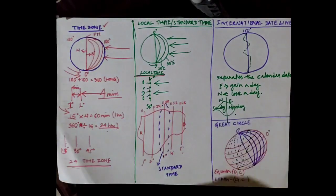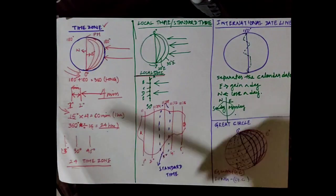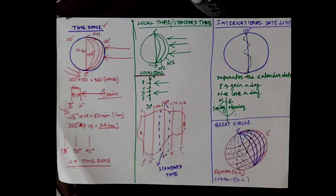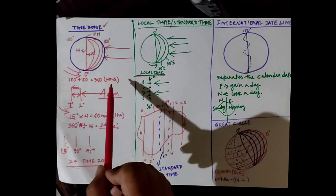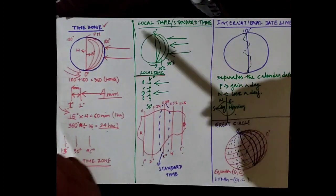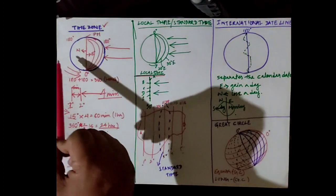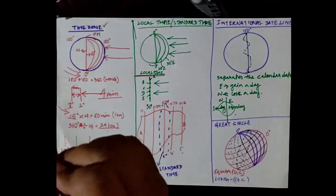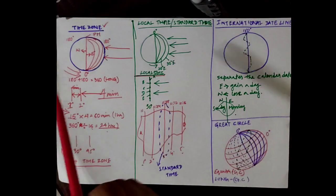The prime meridian divides the earth into two halves: the eastern hemisphere and the western hemisphere. So 180 longitudes are drawn on the eastern hemisphere as well as on the western hemisphere, giving altogether 360 longitudes drawn on the earth's surface. Now each of the meridians have different timings as the earth rotates from west to east direction.